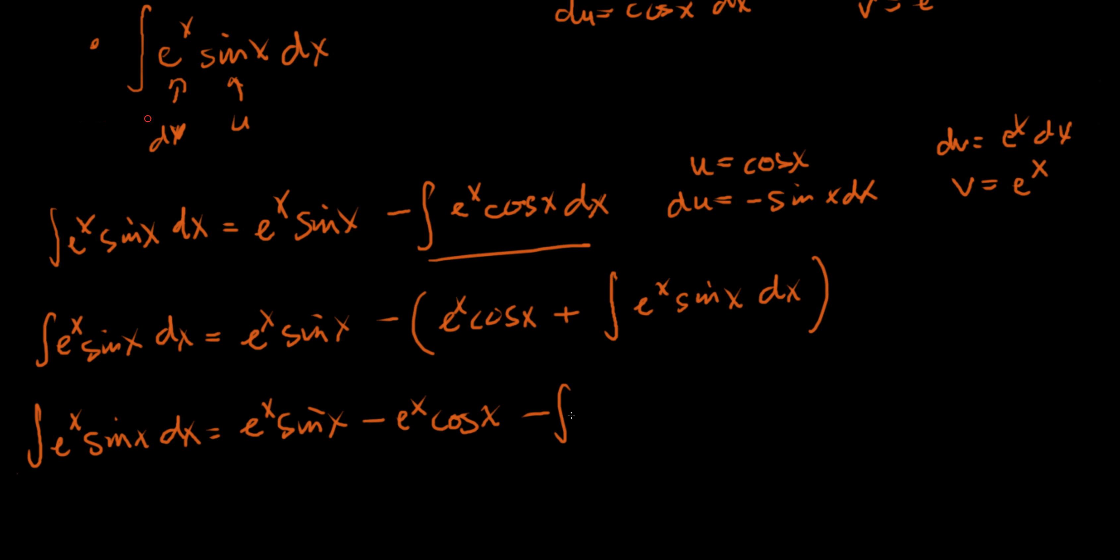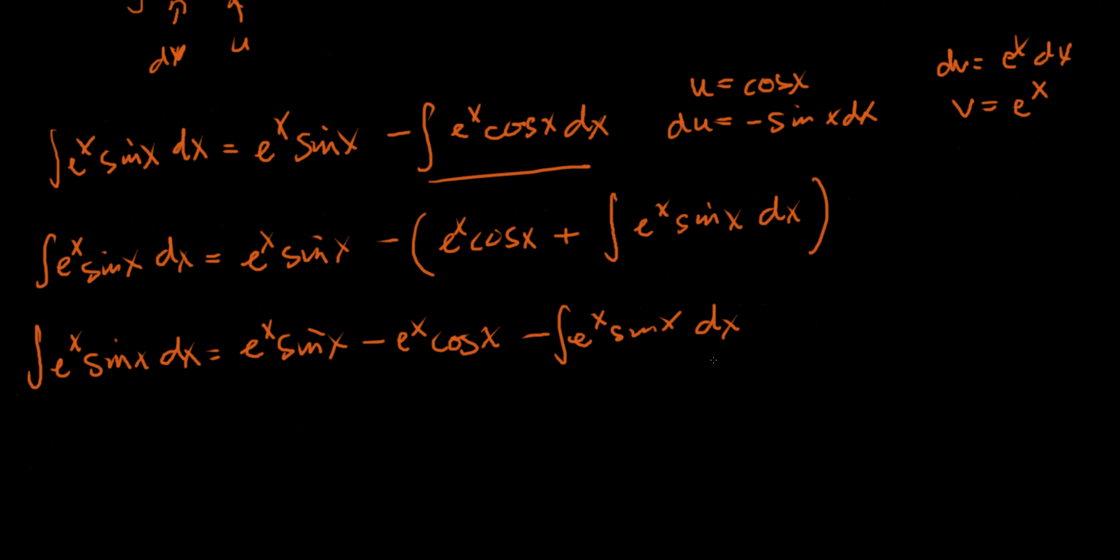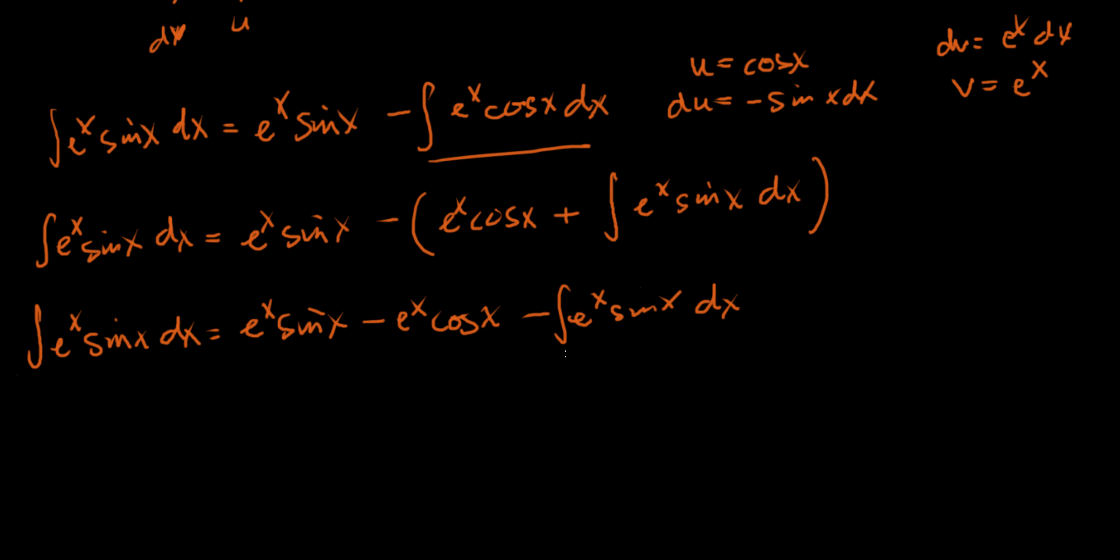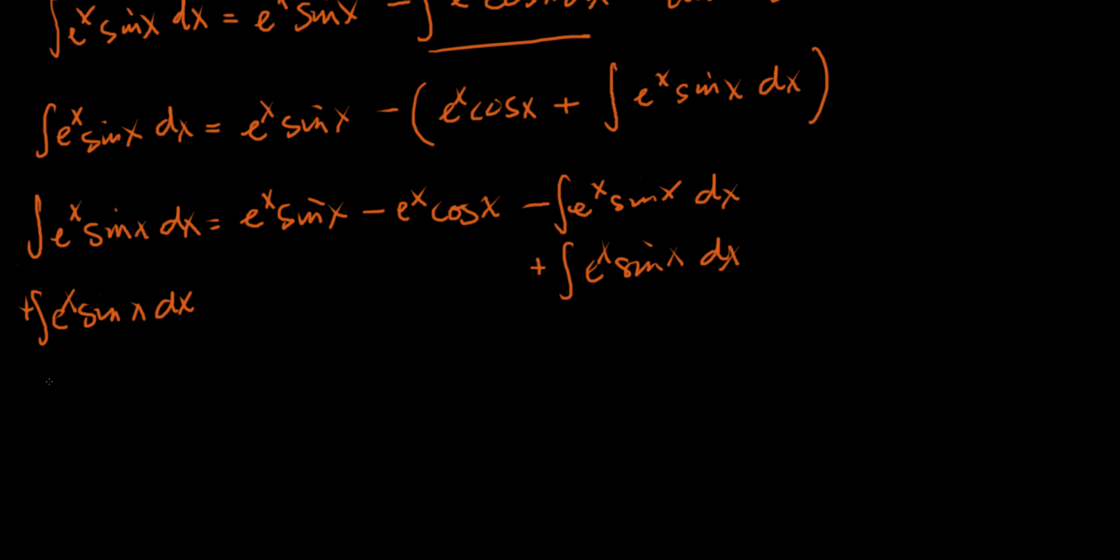So real quickly here I'm going to distribute the negative sign so we can see what's going on. So we have e to the x times sine of x minus e to the x cosine of x minus the integral e to the x sine of x dx. This entire integral can be moved to the left side, so we add that to both sides.